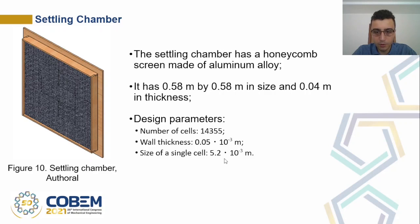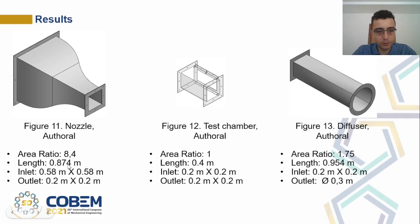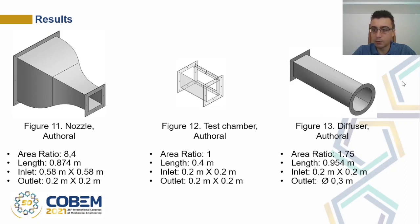The nozzle, test chamber, and diffuser are represented here. The area ratio of the nozzle is 8.4, its length is 0.874 meters, the inlet is the same size as the settling chamber, and the outlet is 0.2 by 0.2 meters. The test chamber has an area ratio of 1, a length of 0.2 meters, and an inlet and outlet of 0.2 by 0.2 meters. The diffuser has an area ratio of 1.75, a length of 0.954 meters, an inlet the same size as the test chamber, and an outlet diameter of 0.3 meters.